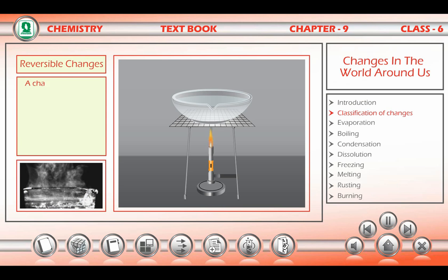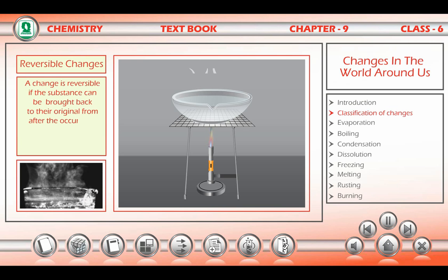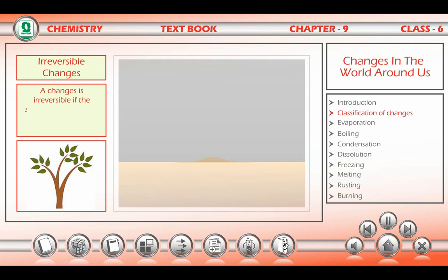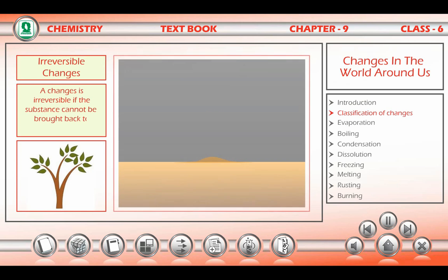A change is reversible if the substance can be brought back to its original form after the occurrence of change. A reversible change is indicated by using a double arrow. A change is irreversible if the substance cannot be brought back to its original state — for example, germination of a seed.